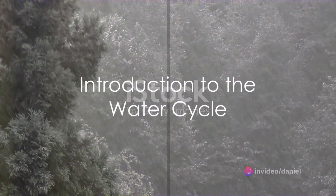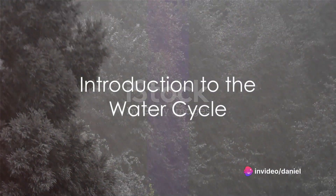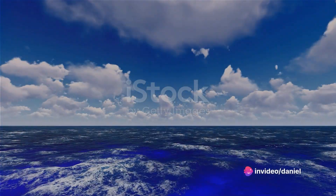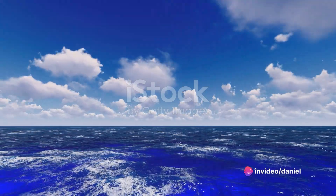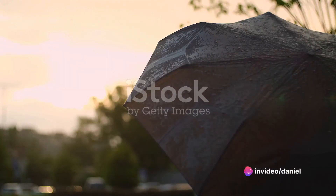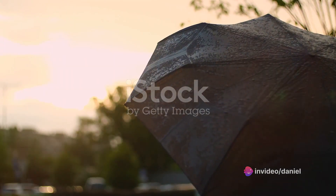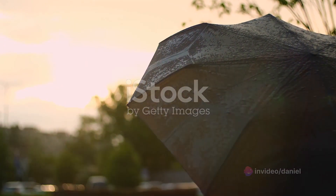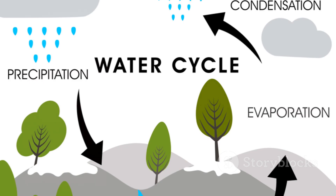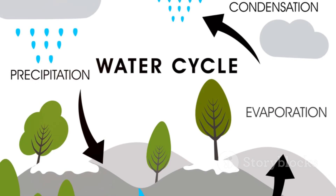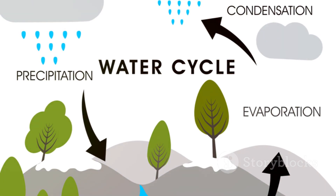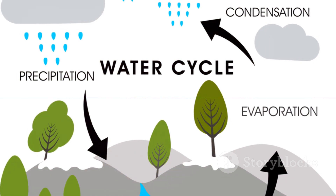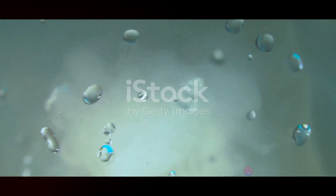Have you ever wondered how rain is formed? Or why on some days you look up to see a clear blue sky and on others you're reaching for your umbrella? Well, the secret lies in a fascinating natural process called the water cycle.